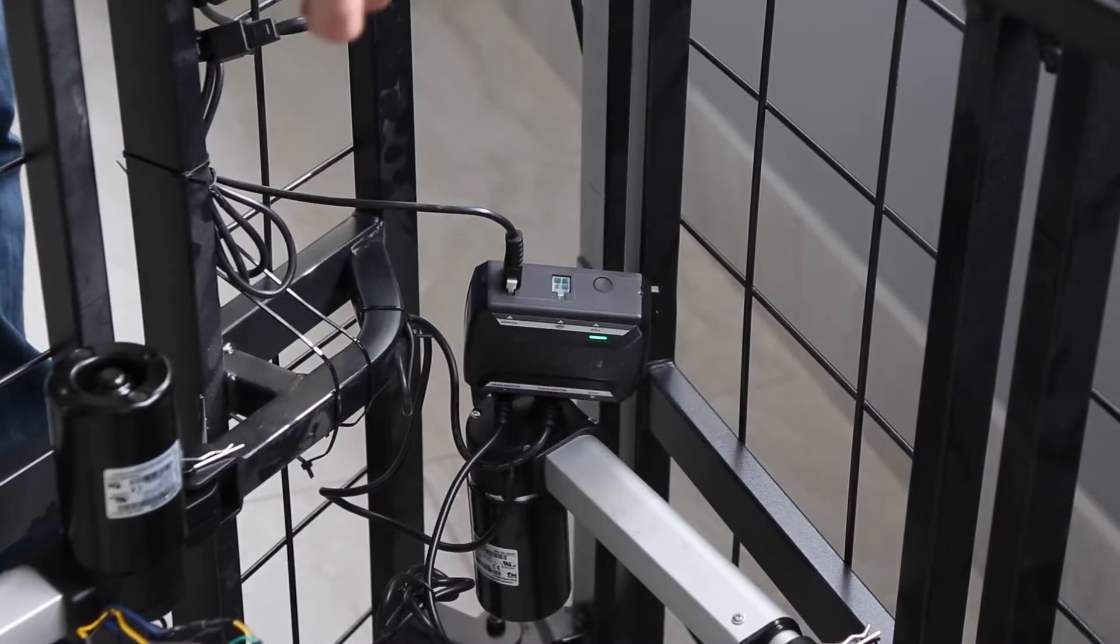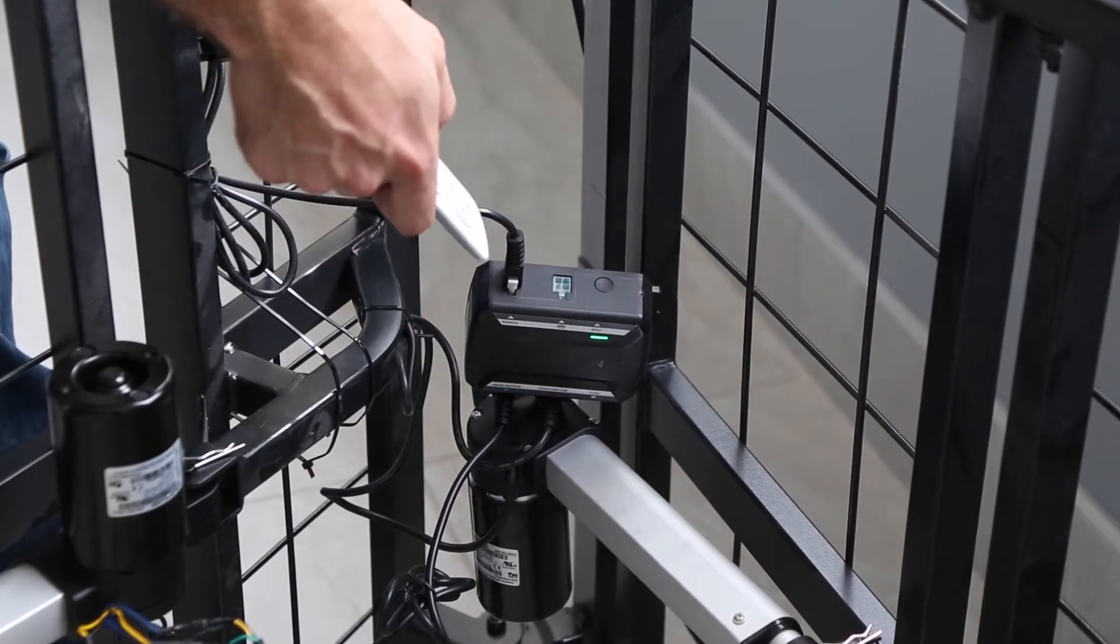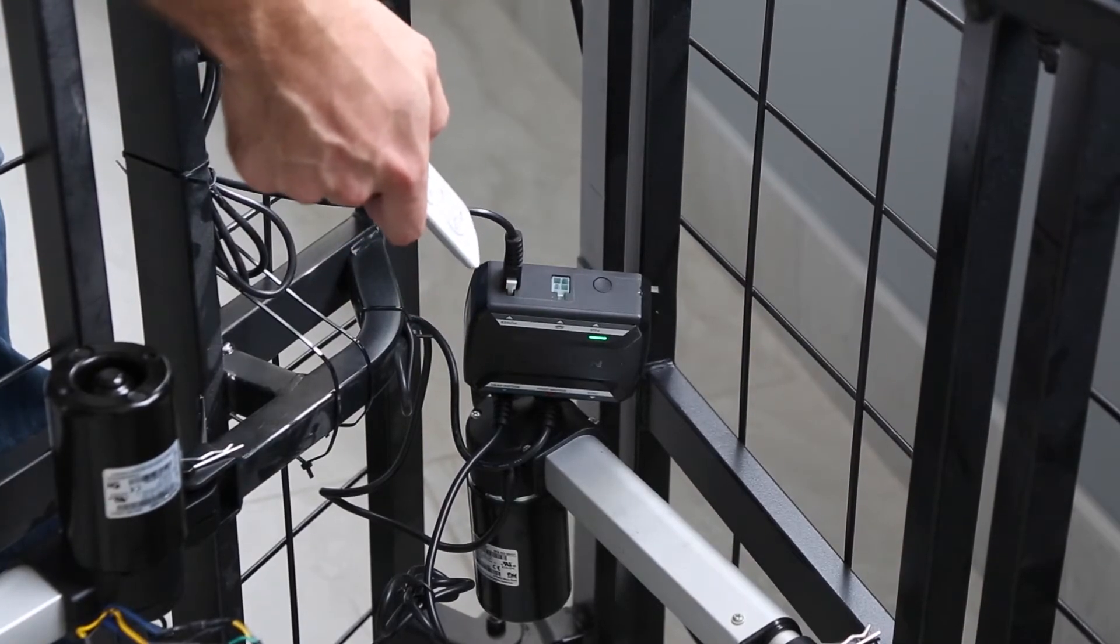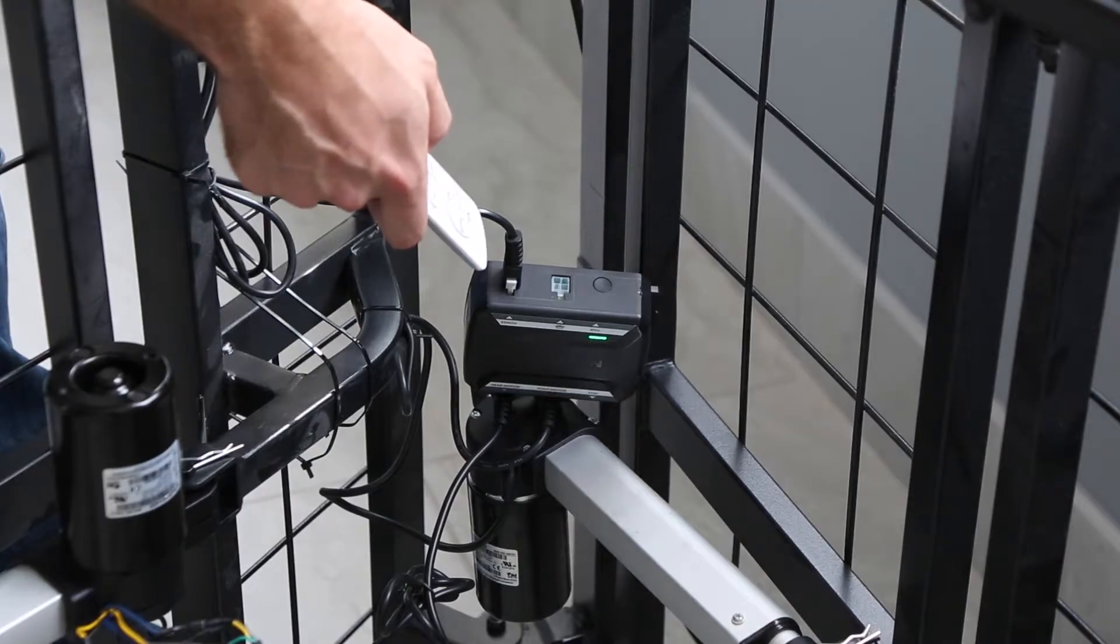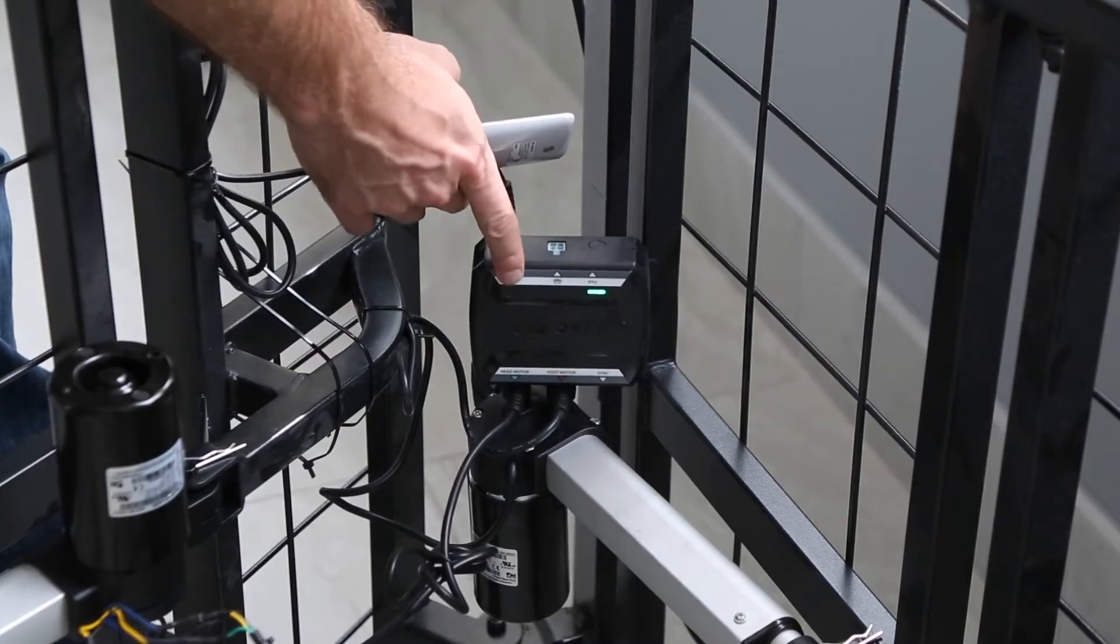Okay, so if you're finding your remote is not working, then it might just need to be resynced with the bed. And to do that is very simple. You'll see your control box here.